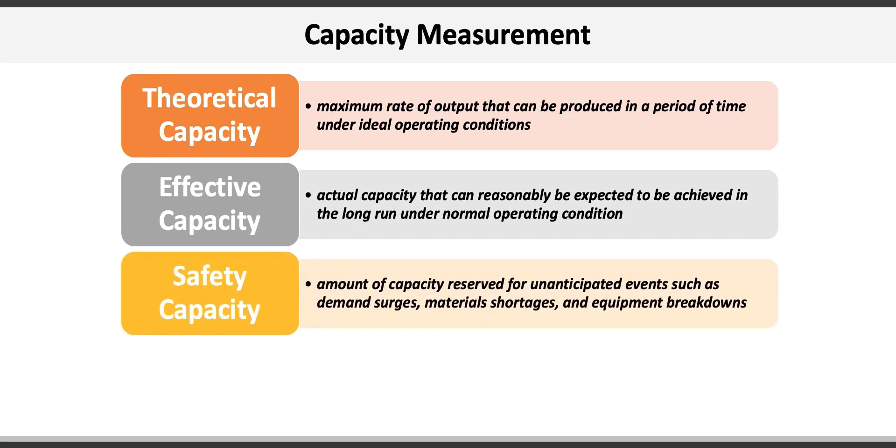Then there's the safety capacity, which is the amount of capacity reserved for unanticipated events such as demand surges, material shortages, equipment breakdowns, etc. For example, if we needed to, we could add on an extra four hours each day for three workdays.